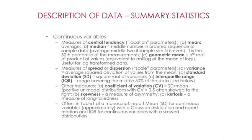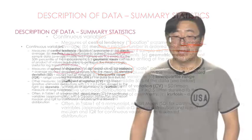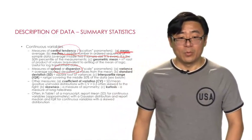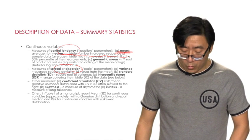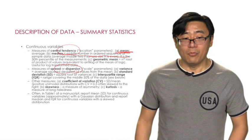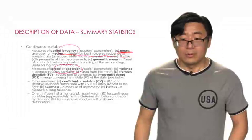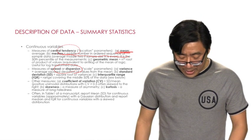The description of continuous variables in terms of summary statistics involves central tendency and dispersion or spread of the data. Measurement of central tendency, often called the location parameter, includes the mean — the arithmetic average of all the data — and the median, which is the middle number in an ordered sequence. For example, if the data has three points: 1, 2, 3, the median is 2. If the data has four points: 1, 2, 3, 4, the median is 2.5.